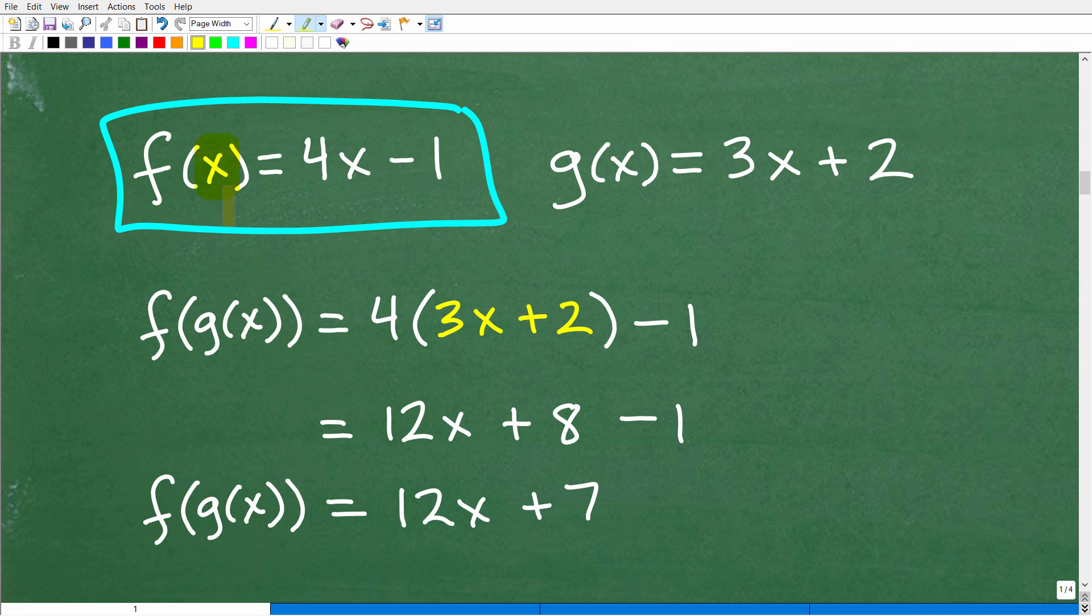This is not going to be that difficult. So we're going to find f(g(x)). So everywhere we see the x, so this x right here, we're going to replace it with the g(x) function. But that means this part of the g(x) function, 3x plus 2. So instead of 4x, we're going to have 4 times (3x plus 2), which is the g(x) function.